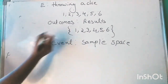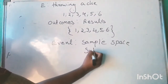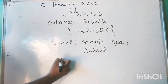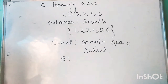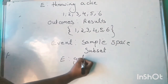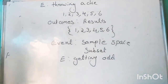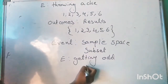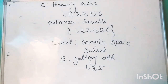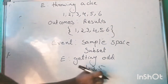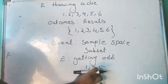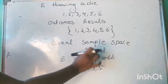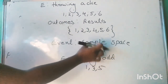Let me use an example. Let E be an event: getting an odd number when a die is thrown. In this case, the odd numbers are 1, 3, and 5. So event E contains 3 outcomes: 1, 3, and 5.